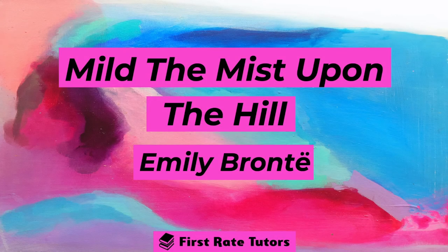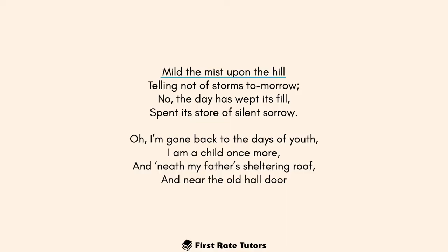The first thing to note is the title itself, 'Mild the Mist Upon the Hill', which shares the first line of the first verse because Emily Brontë never gave the poem an official title. There's lots of alliteration here — especially the M sound in 'Mild' and 'Mist' — which reveals a mild mist covering a hill the narrator can see. This can also serve as a metaphor for nature taking a break from being sad, and by extension, the speaker themselves taking a break from sorrow and melancholy.